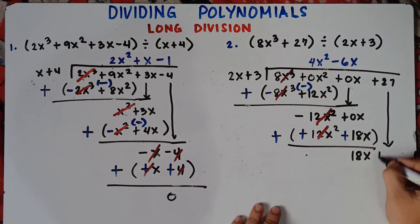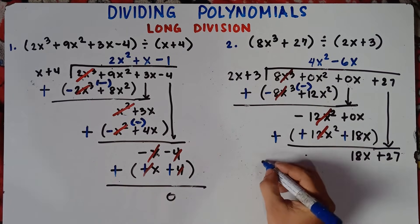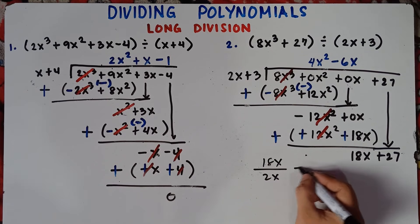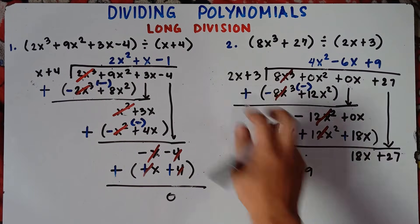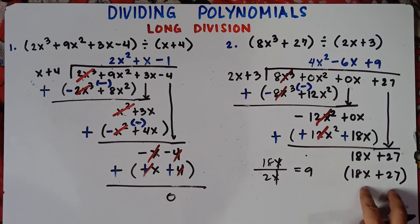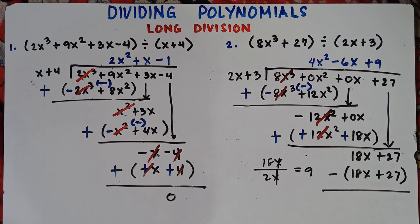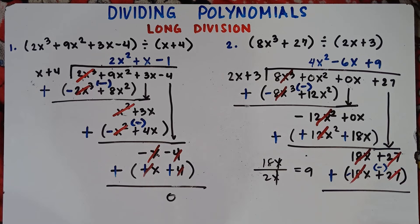Divide 18x by 2x: 18 divided by 2 is 9, and x divided by x cancels, giving positive 9. Multiply: 9 times 2x gives 18x, and 9 times 3 gives 27. Subtract: change the signs — 18x becomes −18x and 27 becomes −27. 18x − 18x cancels to 0, and 27 − 27 equals 0. There is no remainder. The answer for number 2 is 4x² − 6x + 9.